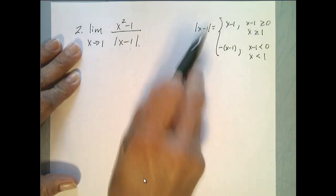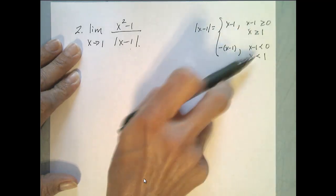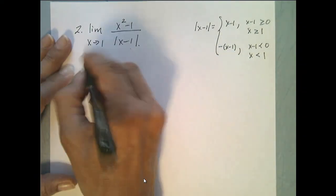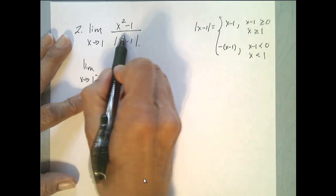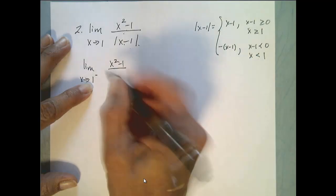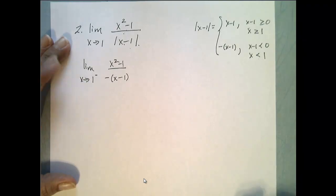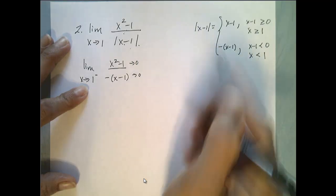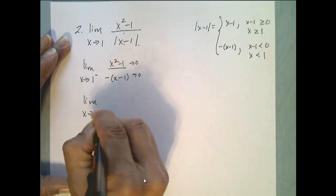Notice that the function changes its meaning on the left and right side of 1, so again we need to look at the left and right-hand limits. The limit as x approaches 1 from the left of my function is x squared minus 1 over — well, from the left of 1 the function is defined as negative x minus 1. If I try direct substitution I get 0 over 0, so this fraction needs to be factored.